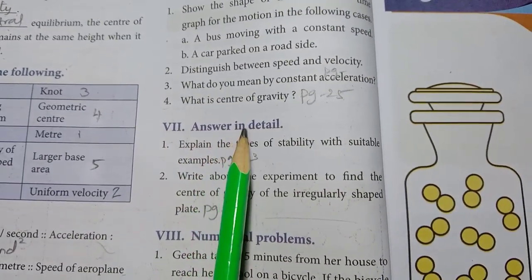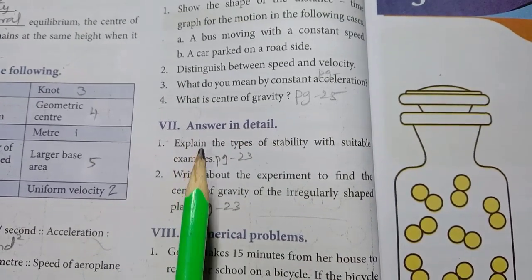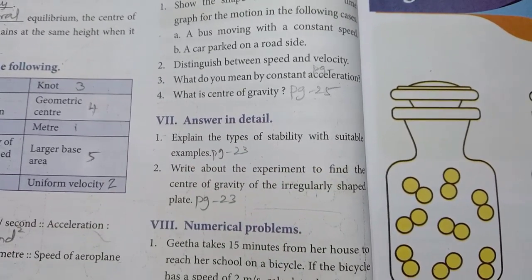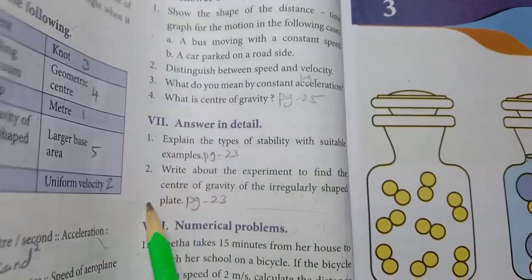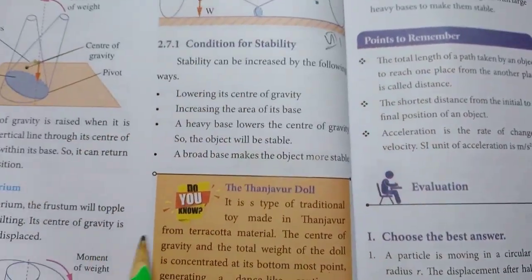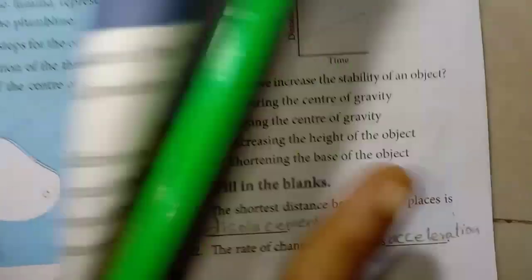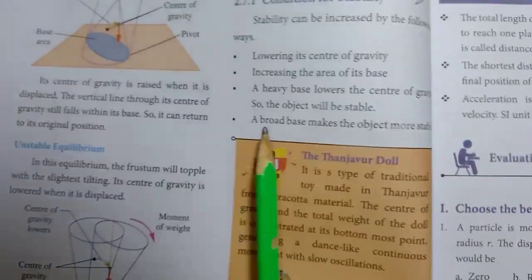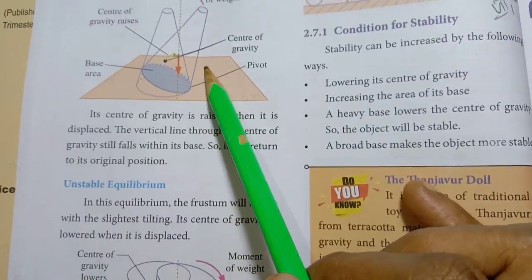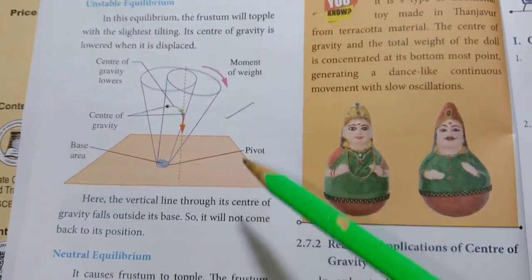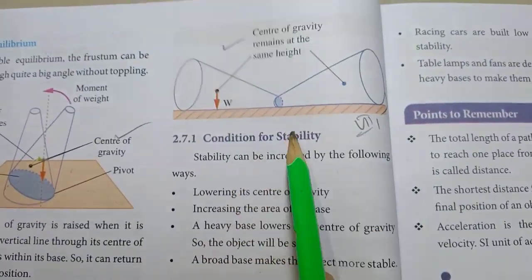Roman numeral 7: Answer in detail. 1st one — explain the types of stability with suitable examples. See page 23, under the topic 'Stability.' Cover stable equilibrium with drawing, unstable equilibrium with drawing, and neutral equilibrium with diagram.